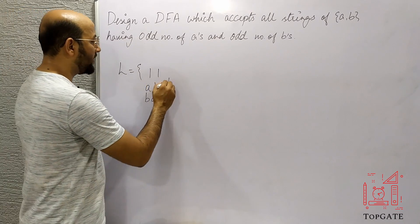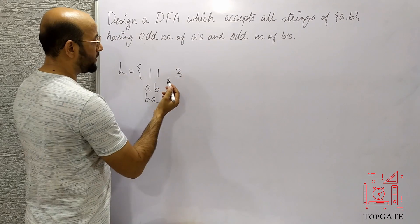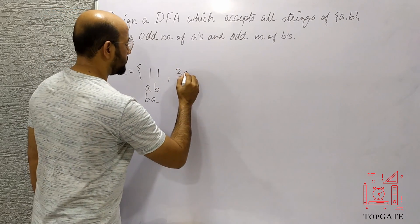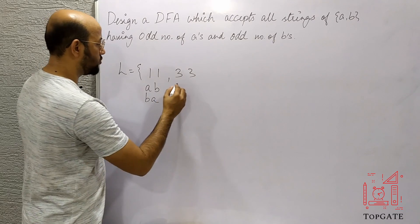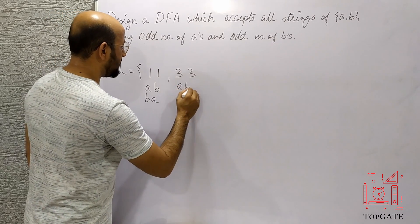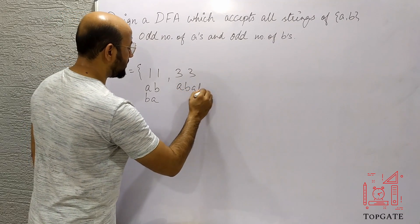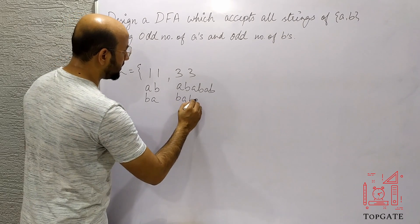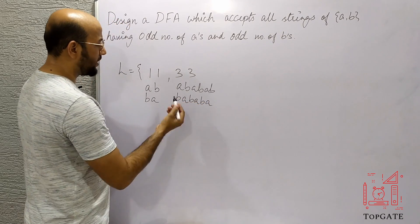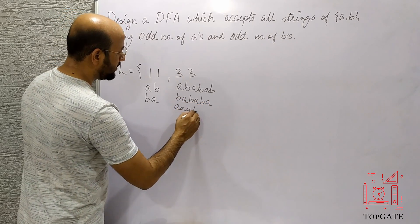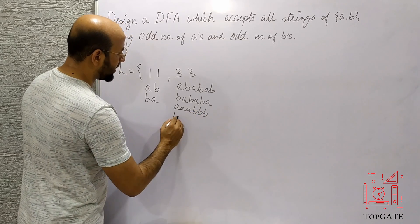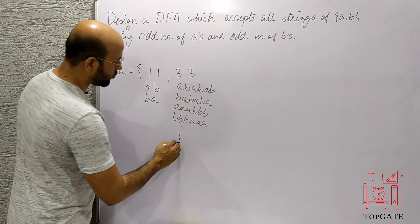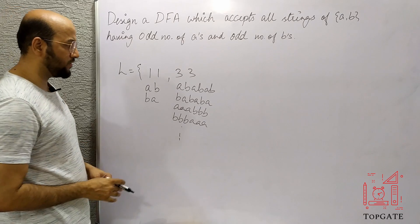The next odd number is 3, so we take 3 B's and 3 A's. What can we have? We can have ABABAB, or BABABA, or triple A followed by triple B, or triple B followed by triple A, and so on. So there are a number of options.